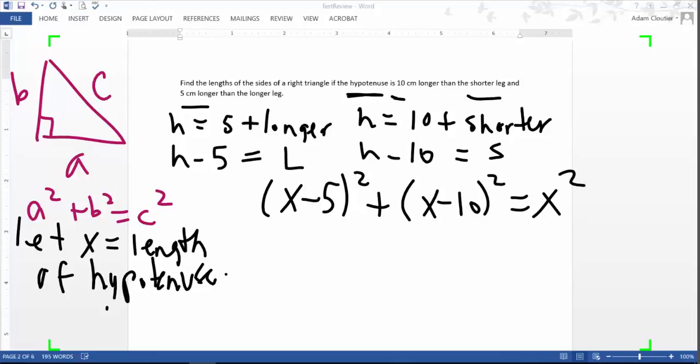Remember, the hypotenuse is also squared. So foiling these two expressions out or distributing these two expressions out, I will get X squared minus 10X plus 25. The next one, I will get X squared minus 20X plus 100 equals X squared.